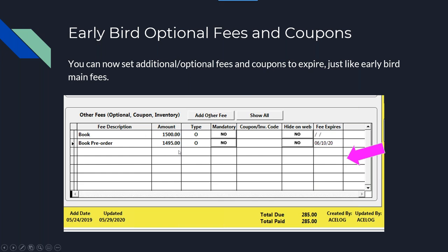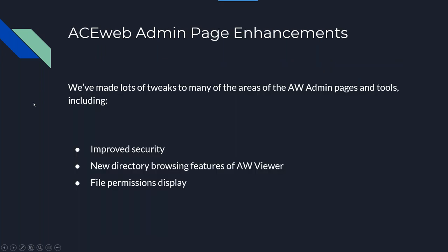Early bird or optional fees can now be set up with an expiration date. The discounted fee will show up until you hit the expiration date, at which point it will go away. This is something you can set up ahead of time, have it automated, and not worry about it. We've also made enhancements to the administration page — there's an AceWeb admin page and a web connection admin page covering background processes, and we've improved the security on those.